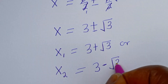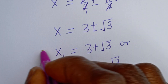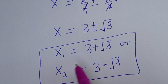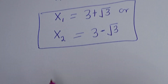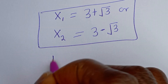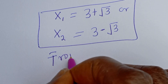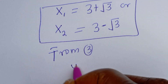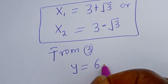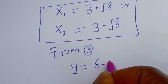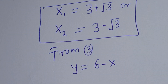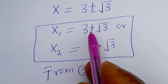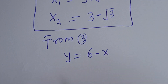Therefore s1 equals 3 plus root 3, and s2 equals 3 minus root 3. These are the values of s. We can now solve for y using equation 3: y equals 6 minus s. When s equals 3 plus root 3, y1 equals 6 minus s1.